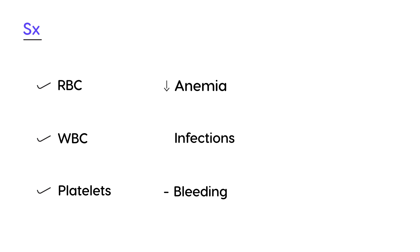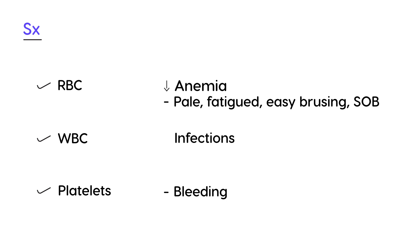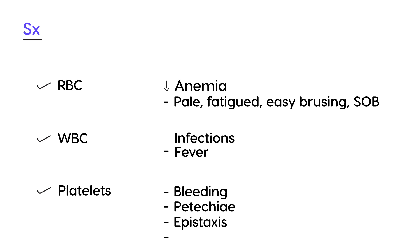If someone is anemic, they would be pale, fatigued, have easy bruising, and probably some shortness of breath. For infections, one of the most common symptoms is fever. And for low platelet counts, bleeding is a symptom, but more specific signs on physical exam include petechiae, epistaxis (bloody nose), and bleeding gums.